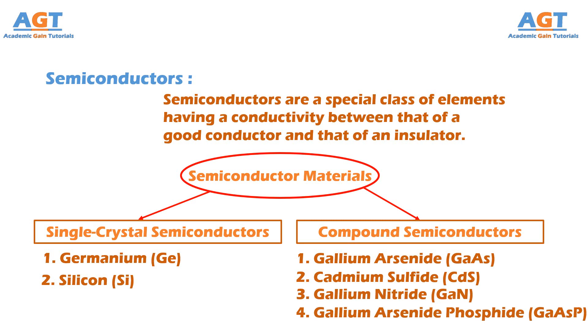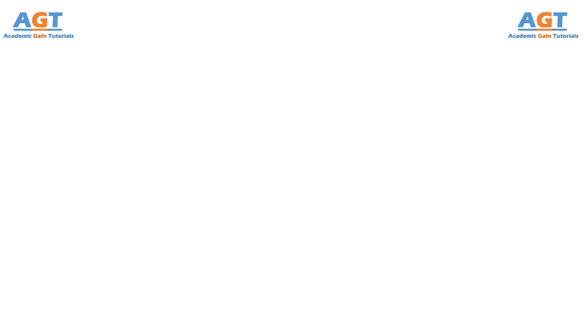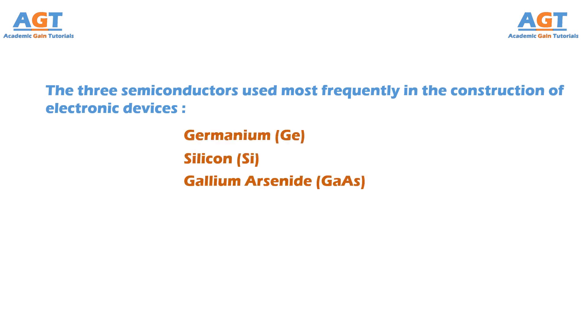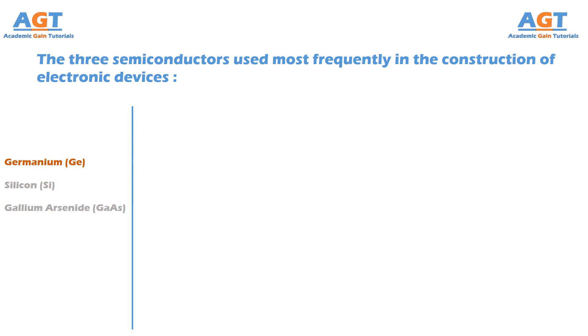The three semiconductors used most frequently in the construction of electronic devices are germanium, silicon, and gallium arsenide.